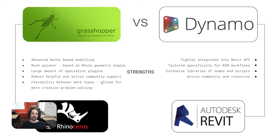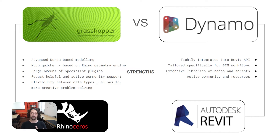The strengths of Grasshopper and Rhino really are around advanced NURBS-based modeling, and because it's tied to Rhino's geometry engine, it is far quicker than Dynamo at resolving geometrical problems. With Grasshopper we also have a large amount of specialist plugins — environmental analysis or other simulation tools — with a huge, robust, and active community supporting their development. Lastly, Grasshopper has built-in flexibility between different data types, which allows for more creative problem solving and makes it a much more intuitive platform for geometric issues.